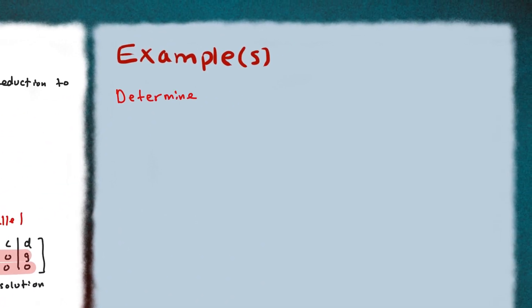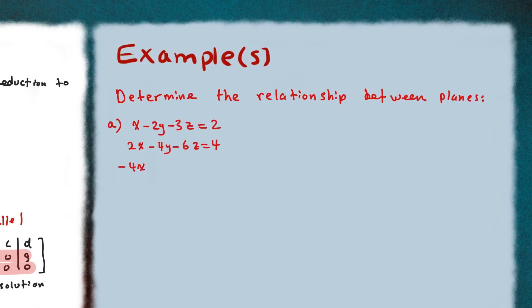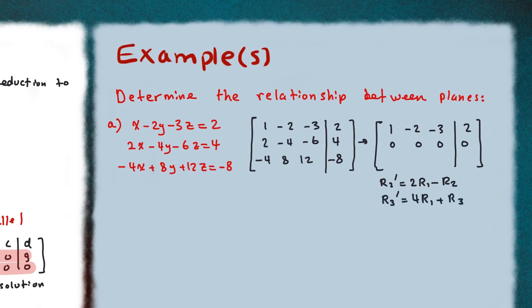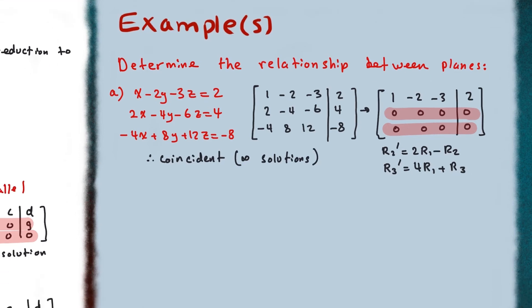Now we'll look at an example. We determine the relationship between three planes for part (a) by writing the augmented matrix with all coefficients and constants. When we reduce it to echelon form, row two and row three both become all zeros. Because of this, we know that all the planes are coincident — they are parallel to each other and share infinite solutions.